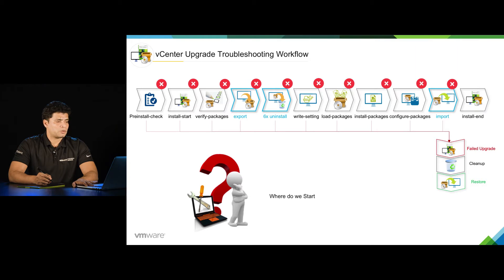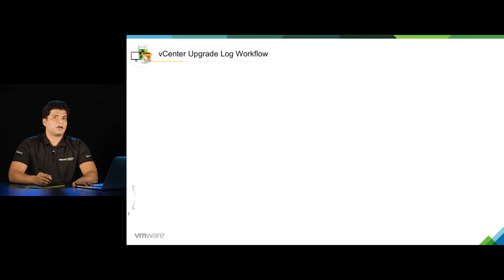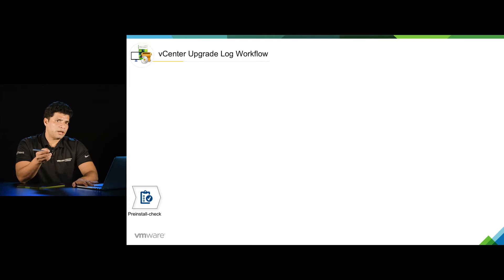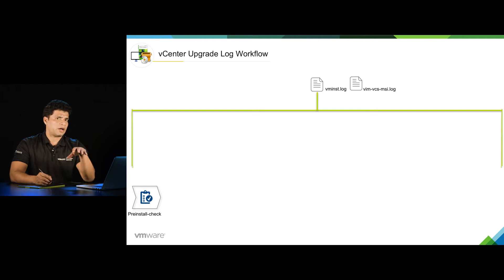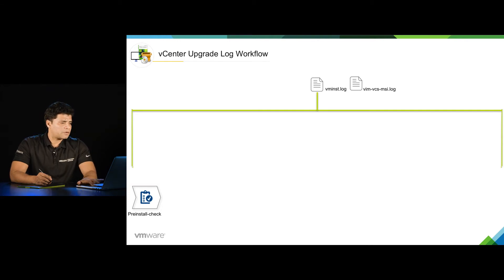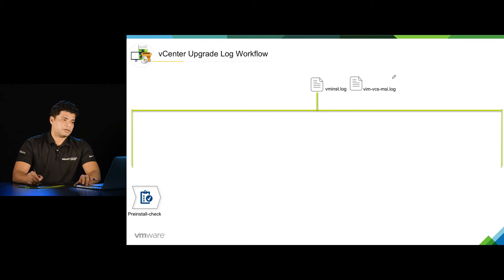To understand that, we really need to understand the logs and at what time those logs are getting created. As we can see, the upgrade process starts with the first phase, which is the pre-install check phase. At this phase we will see there will be two logs getting generated: one is vcinstall.log,